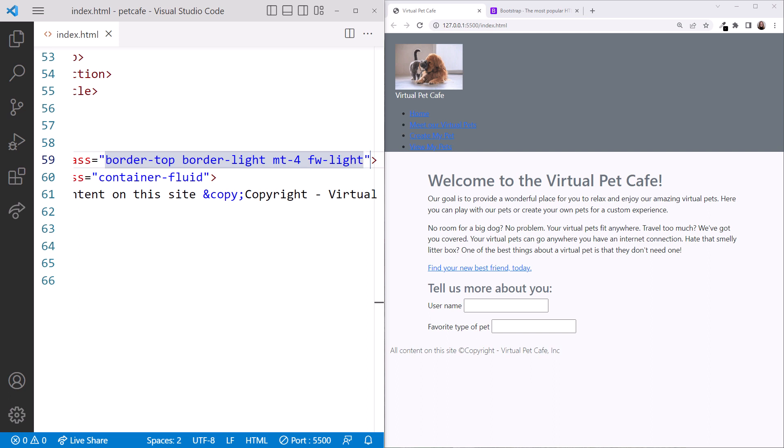Feel free to try out some of the other classes we learned in this lesson. We'll use more of these utility classes throughout this course. Our web page continues to look a bit better. Let's leave our window layout exactly as it is for now and move on to custom styles.